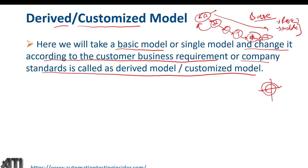Another example is the V model, where we do testing as early as possible, in parallel with the development life cycle. On one side is the Software Development Life Cycle and on the other side is the Software Testing Life Cycle. In the V model, we create test plans and test cases as we go through the development phases, so testing starts early. This is the customization done in the V model.